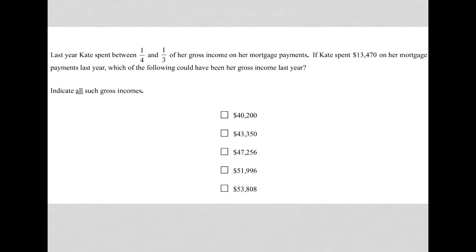This question says that last year, Kate spent between one-fourth and one-third of her gross income on her mortgage payments. This is a translate word problem question. The questions on the GRE are typically very short, and I'm always on the lookout for how to translate what I've read into a mathematical equation.